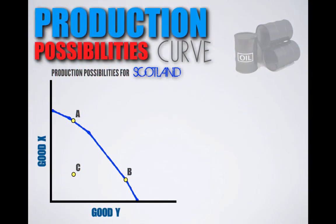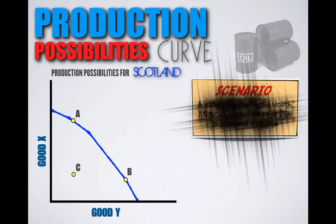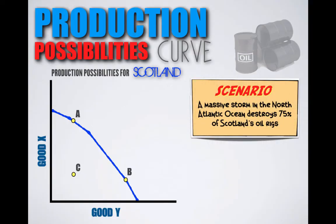Let's do some examples to put these principles in practice. Let's say a massive storm in the North Atlantic Ocean destroys 75% of Scotland's oil rigs. Oil is a resource, and with less resources available for production, Scotland will experience economic contraction, meaning that their PPC is going to shift inward and they simply will not be able to produce as many goods as they used to.